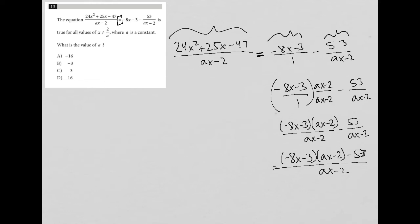That's going to be equal to my 24x squared plus 25x minus 47, all over ax minus 2. Now that I have the same denominator on both sides of the equal sign, and now I have a single fraction.